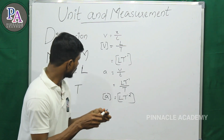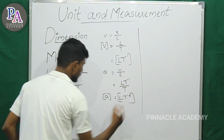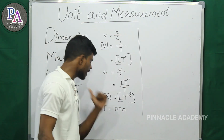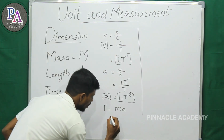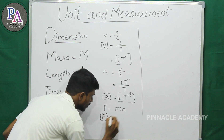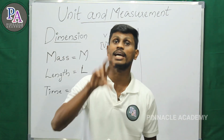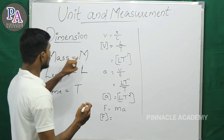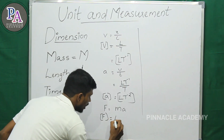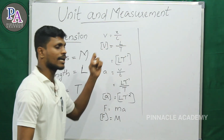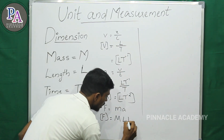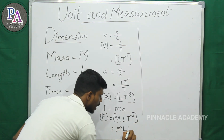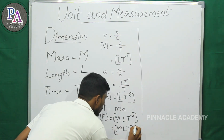Next, force. Force is equal to mass times acceleration. Mass has dimension M, and acceleration has dimension L T raised to minus 2. So the dimension of force is M L T raised to minus 2.